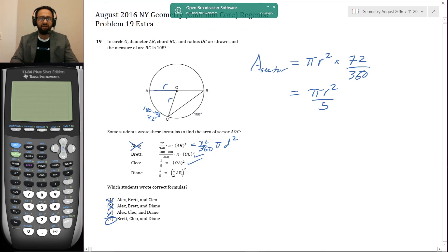So Brett, Cleo, and Diane are correct. Alex is wrong. We've checked our answer by not just confirming that Alex is wrong and eliminating choices one through three, but also confirming that Brett, Cleo, and Diane were right. So not only do we have an answer here, but we've confirmed that it's right. It's a guarantee two points. When we go to check our answers, we don't have to check problem 19. We got it right.